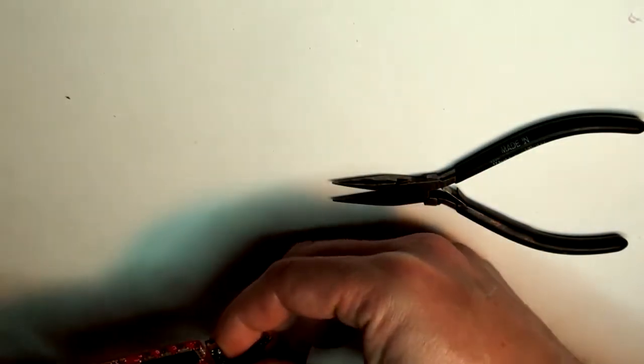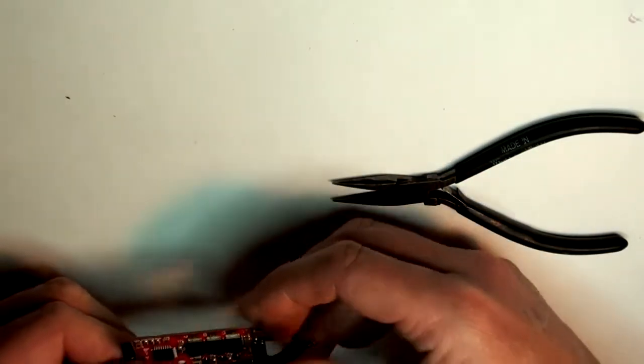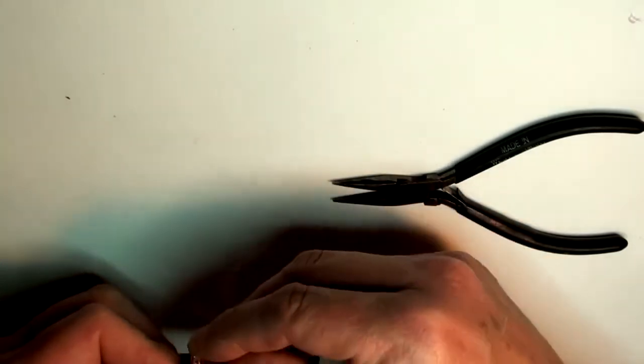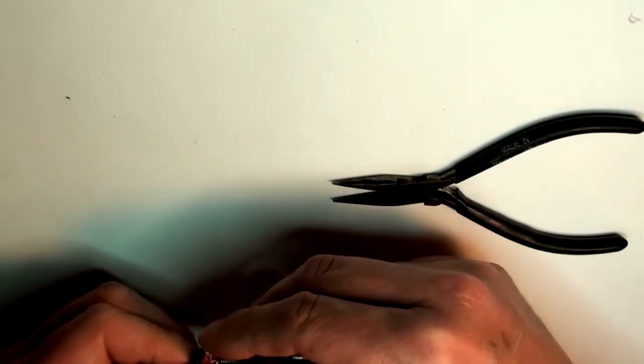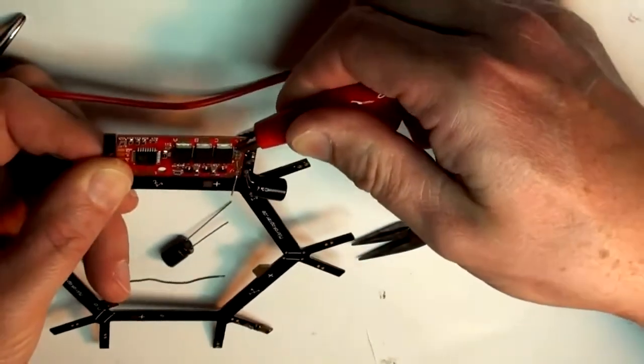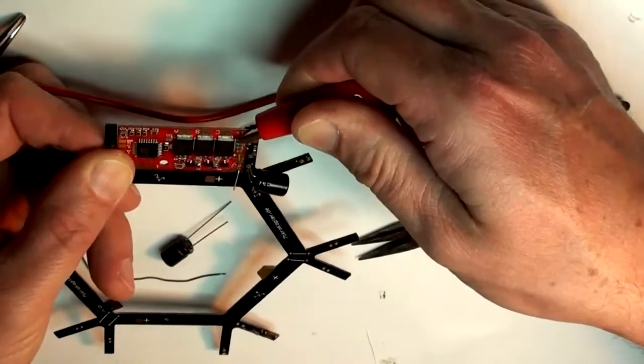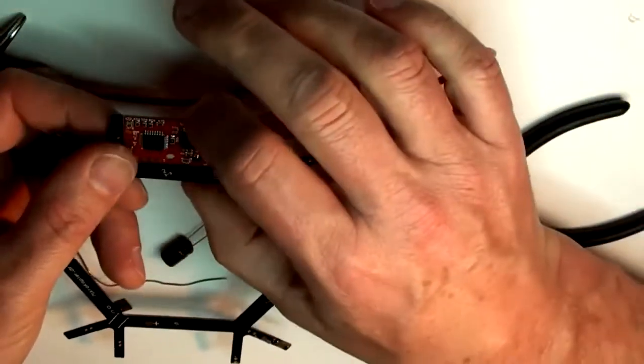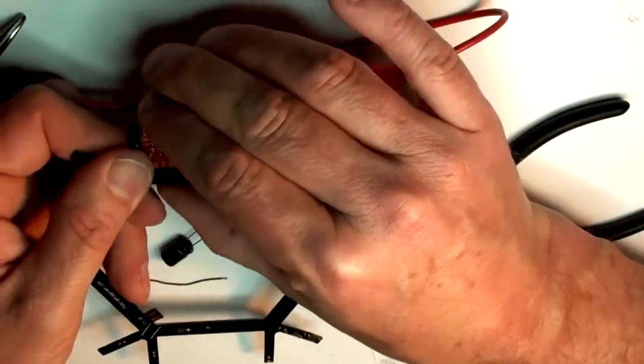And then I'll bend these out just a little bit to hold it. You can take an alligator clip like this and just hold it right here. And that will give you a nice flat surface to work with.